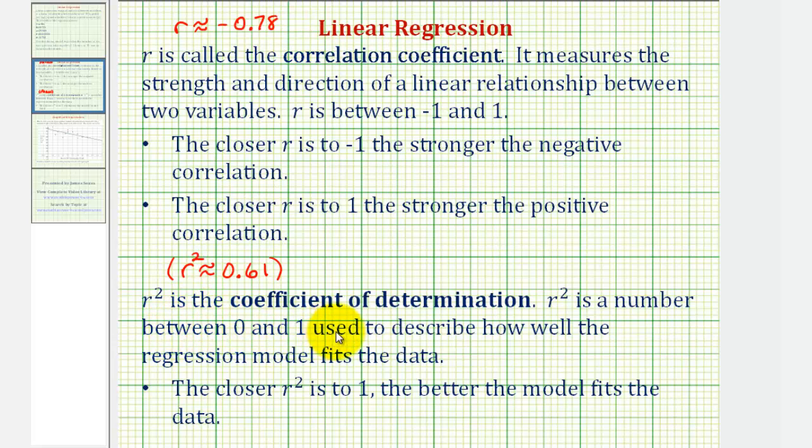And then r squared is the coefficient of determination. R squared is a number between 0 and 1 used to describe how well the regression model fits the data. The closer r squared is to 1, the better the model fits the given data. And for our model, r squared is approximately 0.61. So this is not a great model since this value is not extremely close to positive 1.